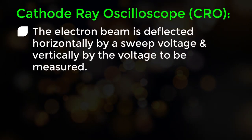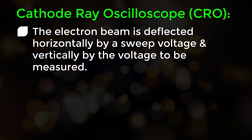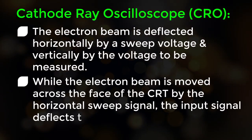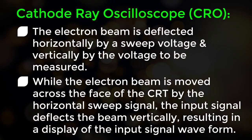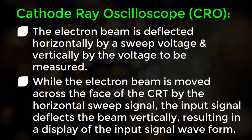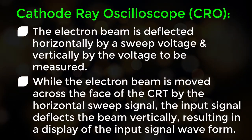In a CRO, the electron beam is deflected horizontally by a sweep voltage and vertically by the voltage to be measured. While the electron beam is moved across the face of the CRT by the horizontal sweep signal, the input signal deflects the beam vertically, resulting in a display of the input signal waveform.